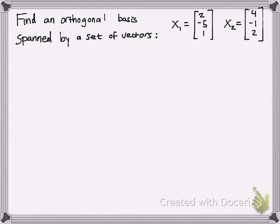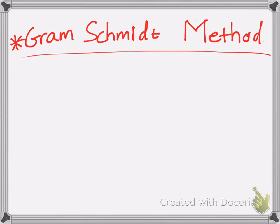So here's a typical problem you might come across. You want to find the orthogonal basis, and we have two vectors here spanned by that set of vectors. But first, the way you're going to want to approach this is something called the Gram-Schmidt method.